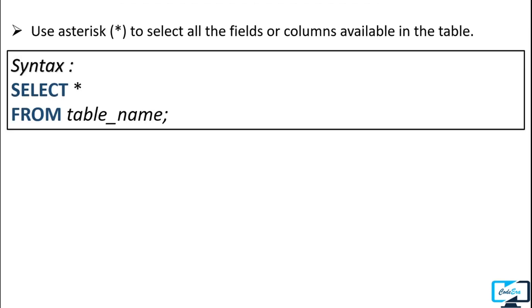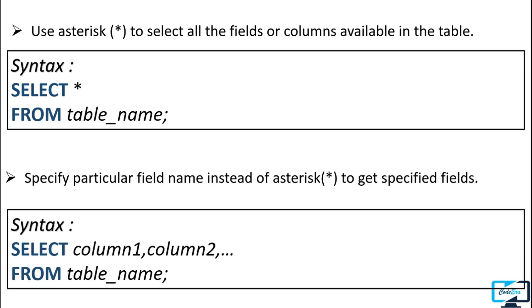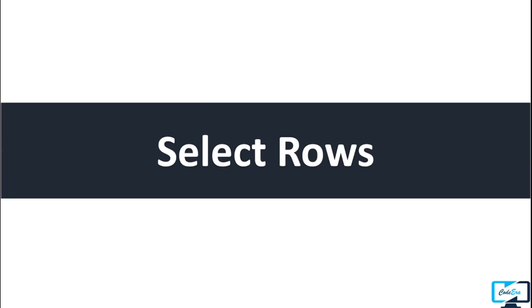Here is the general syntax of the SELECT command: we write SELECT star FROM and then the table name. The star means all columns, so this query will fetch all columns of the table. If you want to fetch only specific columns, then in place of the star or asterisk you write the names of those specific columns.